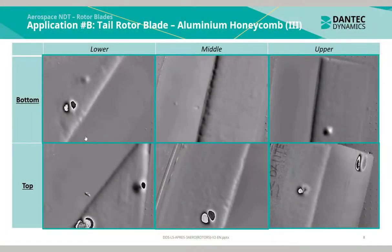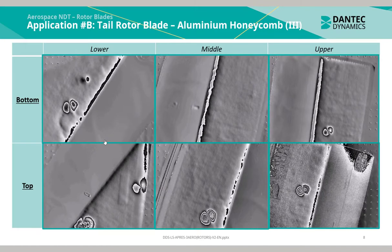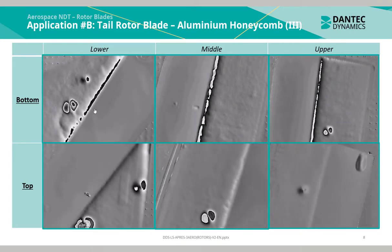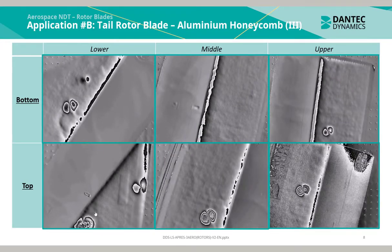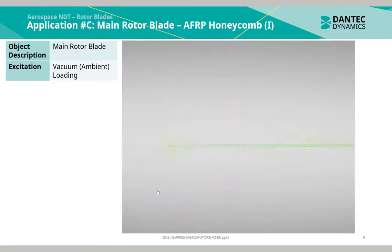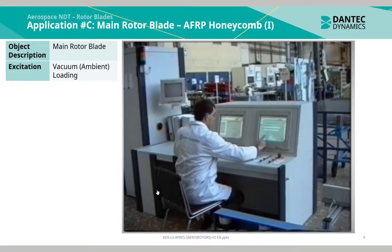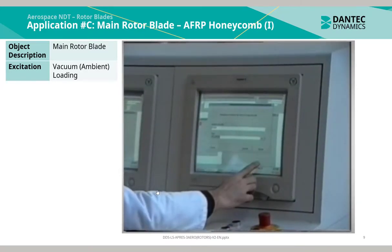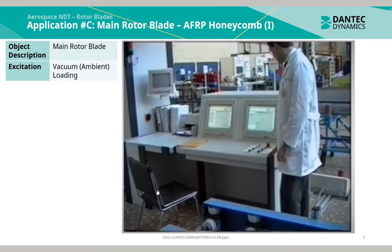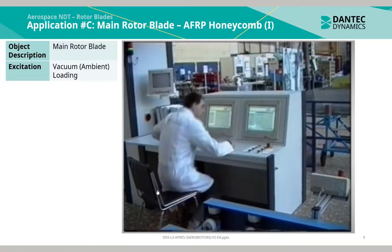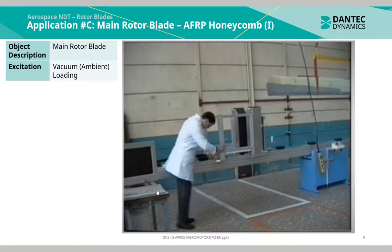Here are the individual phasemap recordings of the measurement. As can be seen in each of the phasemap recordings, there are multiple localised indications of defects. This is an automation application for an NET inspection of a main rotor blade. The excitation method was vacuum ambient loading. The operator firstly selects the test inspection measurement configuration and inserts the rotor blade on a conveyor belt that takes the blade inside a vacuum chamber.